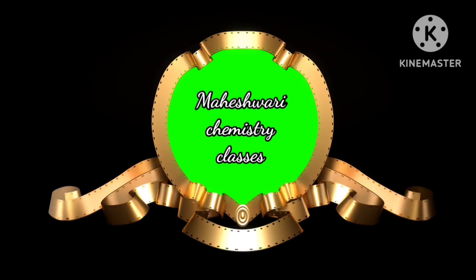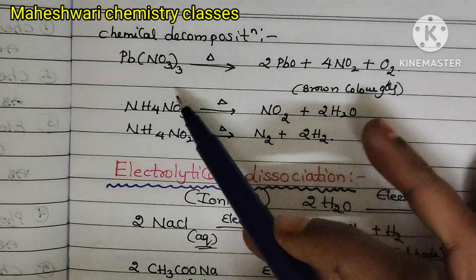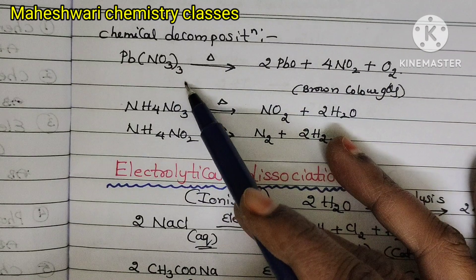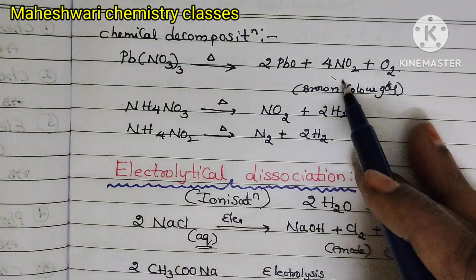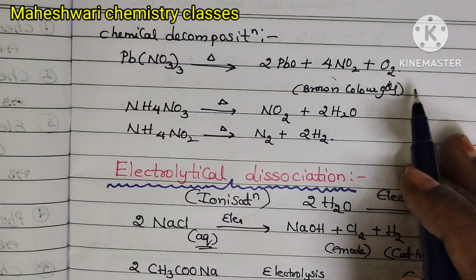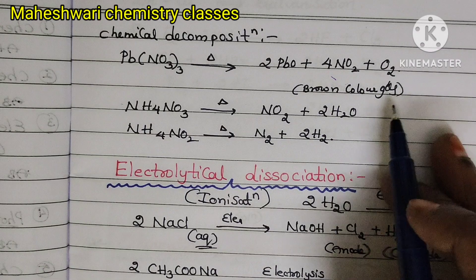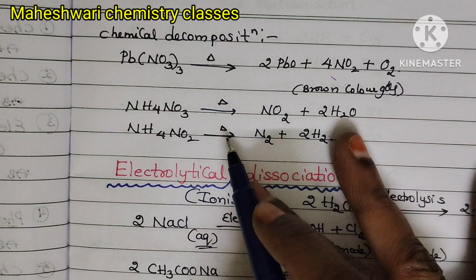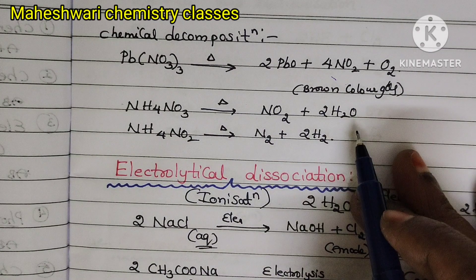Next part is chemical decomposition examples. Lead nitrate gives nitrogen dioxide and oxygen. Ammonium nitrate gives nitrogen dioxide and water.